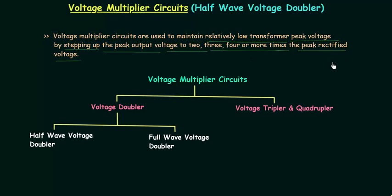The peak rectified voltage is Vm, and we use voltage multiplier circuits to step up the peak output voltage to 2, 3, 4 or more times the transformer peak voltage. So we don't have to keep the transformer peak voltage at a high value. We can keep it at relatively lower values and by using voltage multiplier circuits we can step up this value 2, 3, 4 or more times.